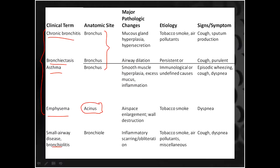The major pathological changes in chronic bronchitis: it is very common in smokers. Because of tobacco smoke or air pollutants, there will be mucus production by the mucus glands, and because more mucus is needed to combat the inflammatory reaction, there will be mucus gland hyperplasia. Because of this mucus production there will be sputum production, and the patient is going to present with cough and sputum production as the patient tries to expel this mucus.